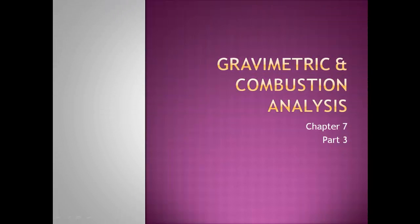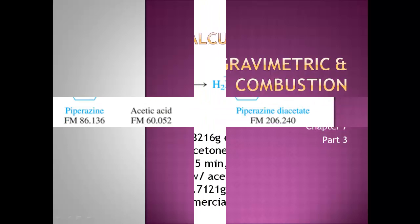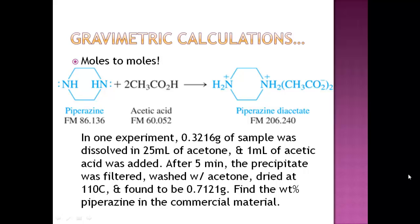Alright, it's finally time to do some problems. This is Part 3 of Chapter 7, Gravimetric and Combustion Analysis. Let's get started. The first gravimetric calculation we're going to perform looks pretty scary, but actually is as easy as a problem in general chemistry. All we have to do is relate the mass of the precipitate to the mass of the original analyte. That's done with a balanced reaction and moles to moles.